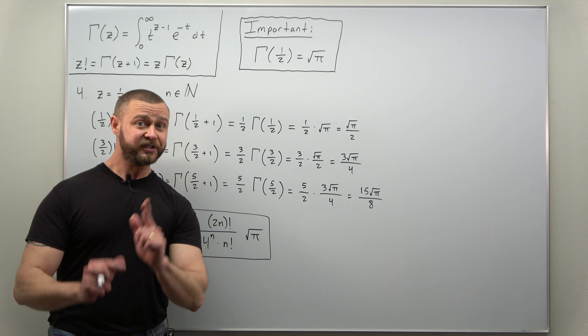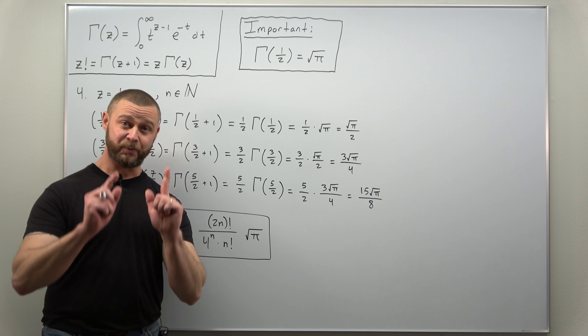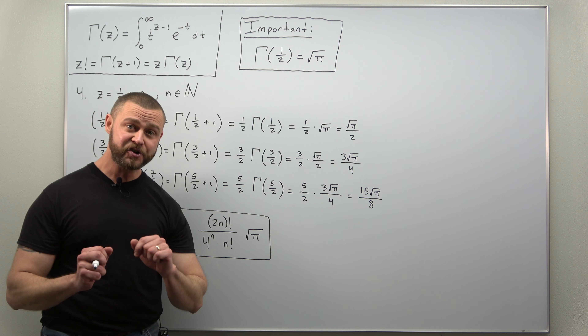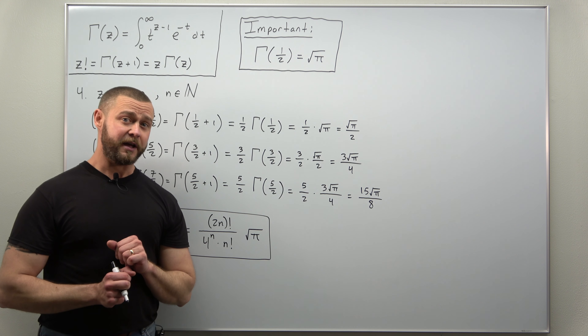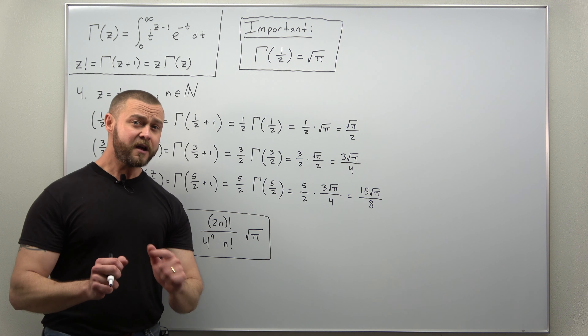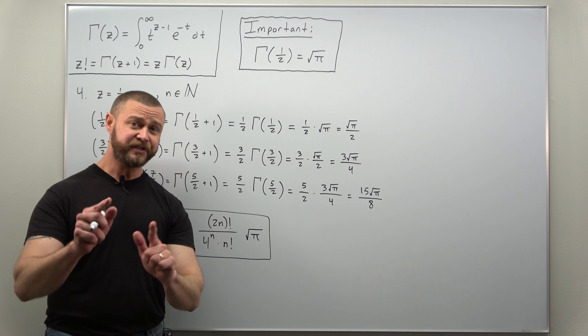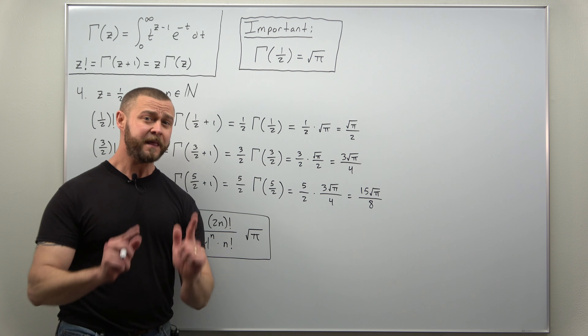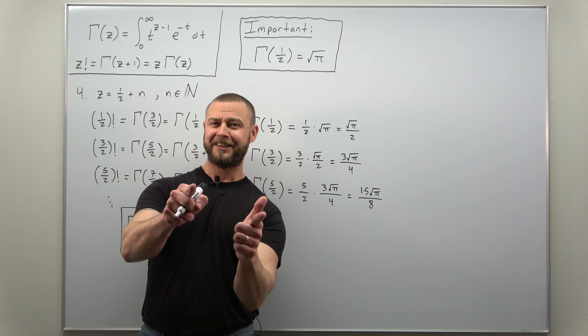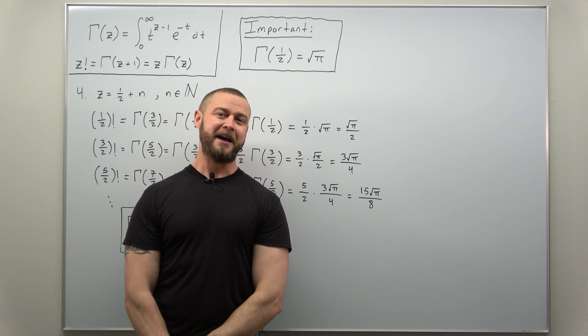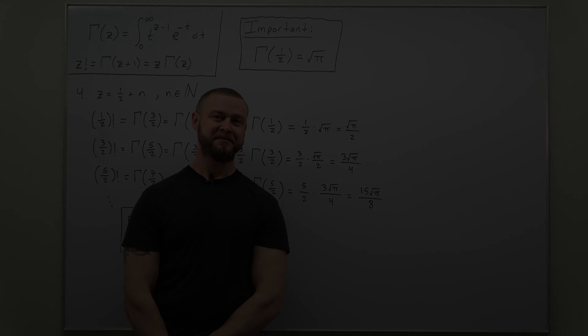And that is it — that's how we find the value of factorials for non-integer values. We need the gamma function, and it gets rather complicated. Hope you enjoyed the video and all the different parts we went through. If you did, support the channel: like and subscribe.